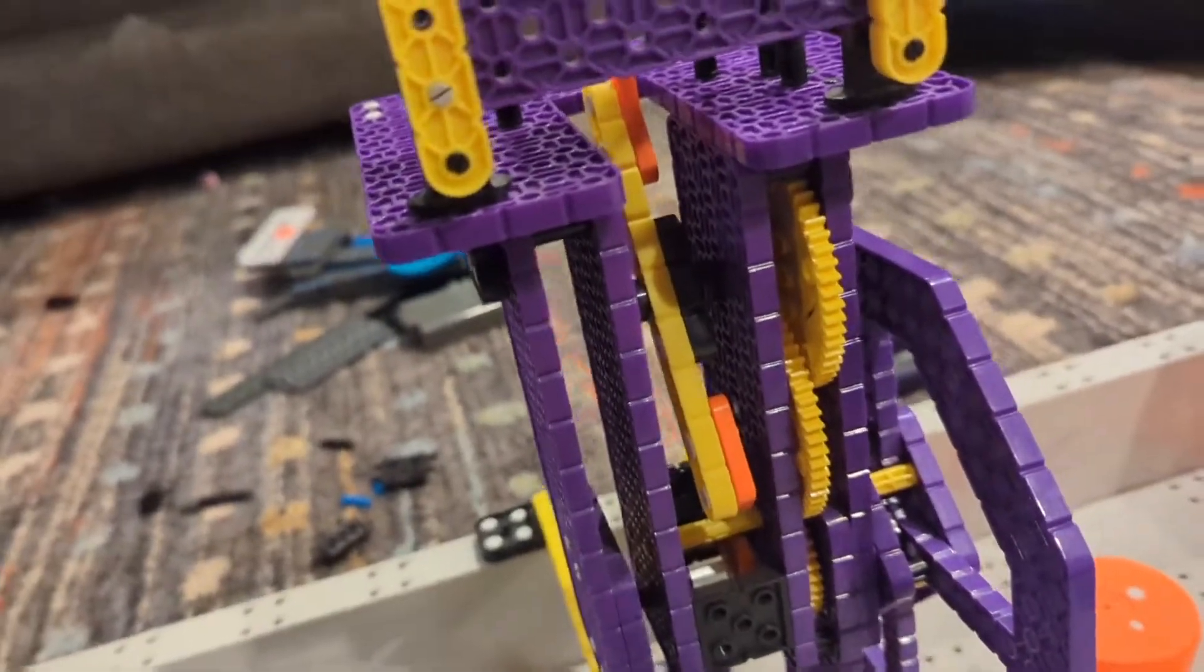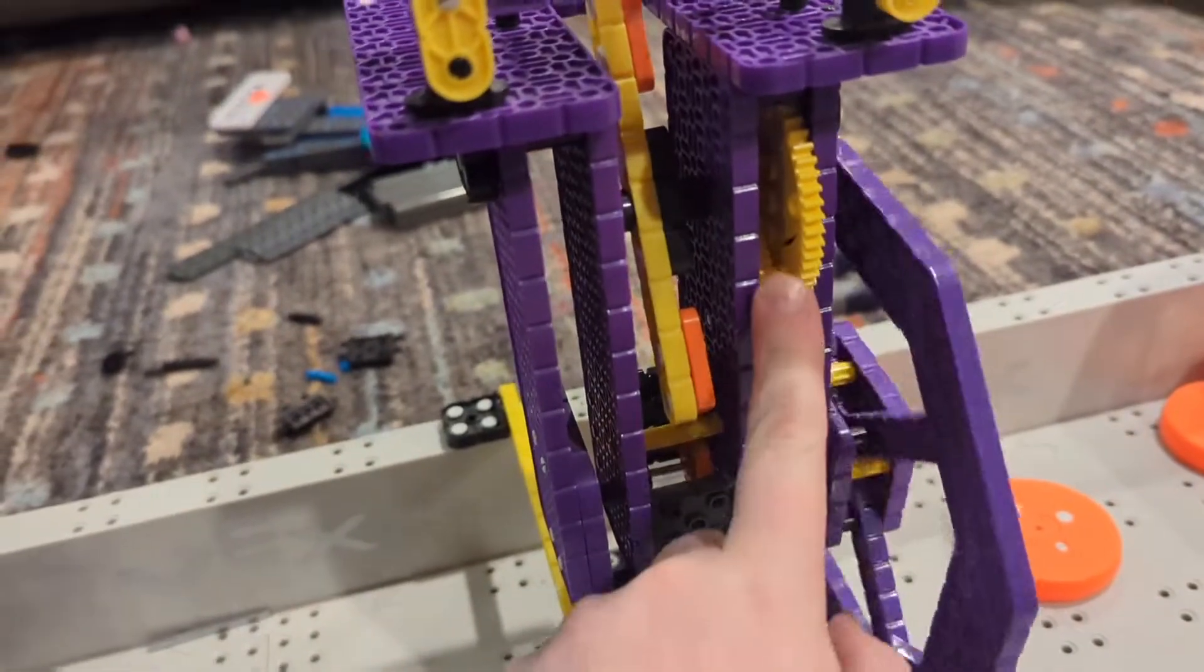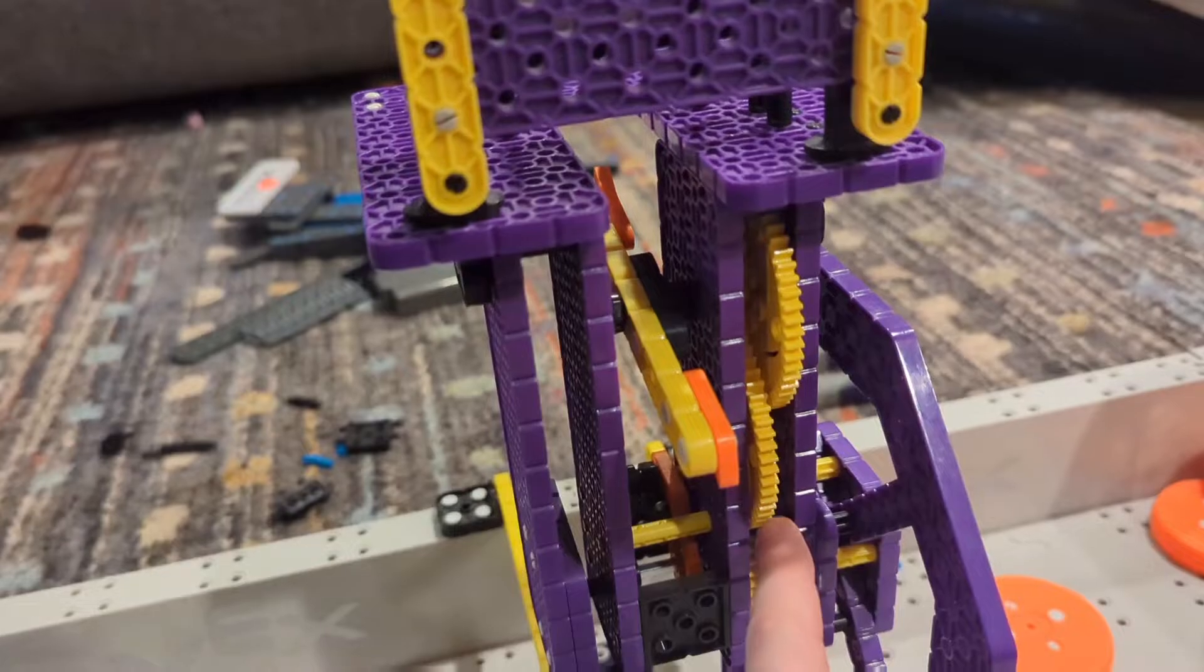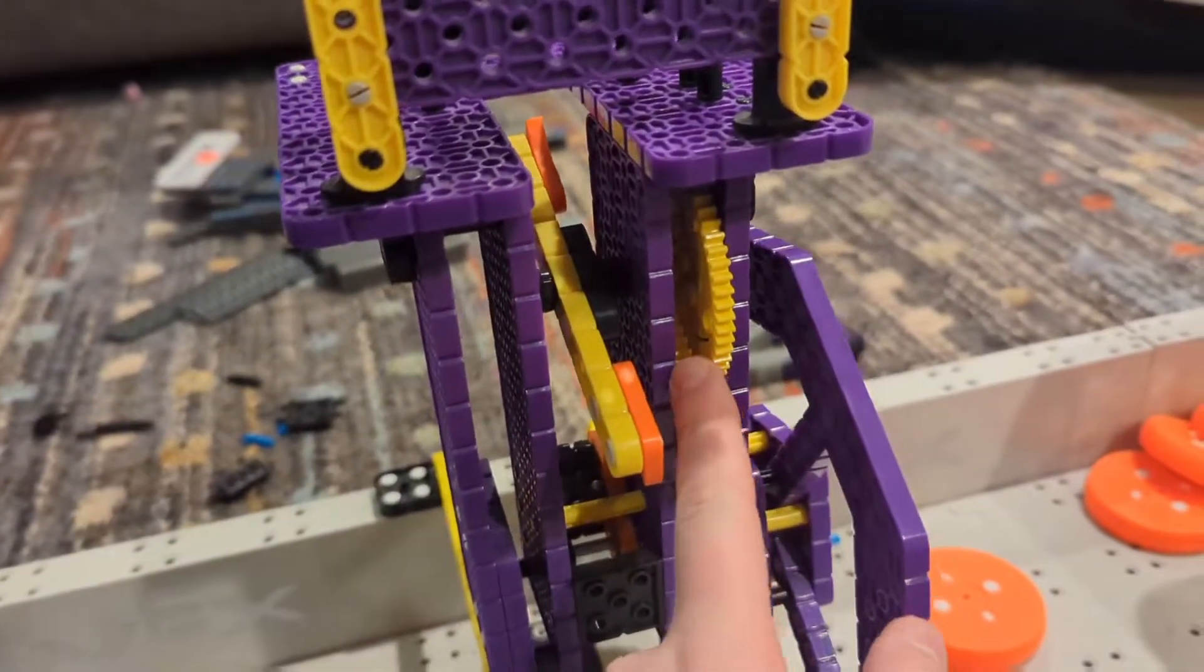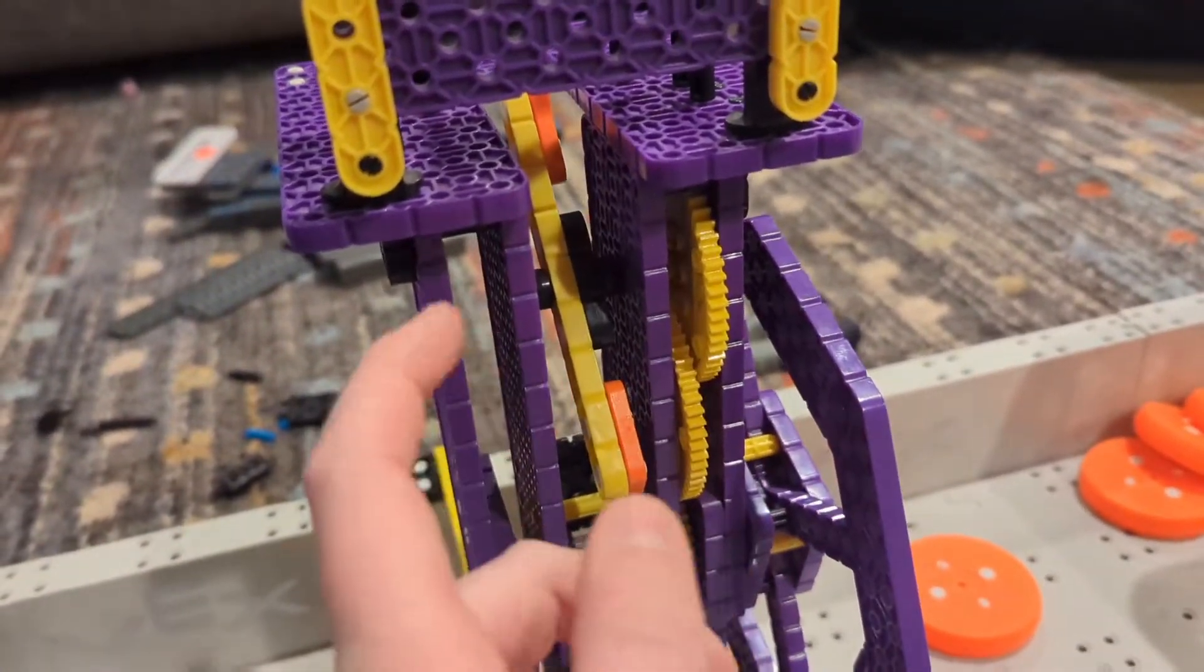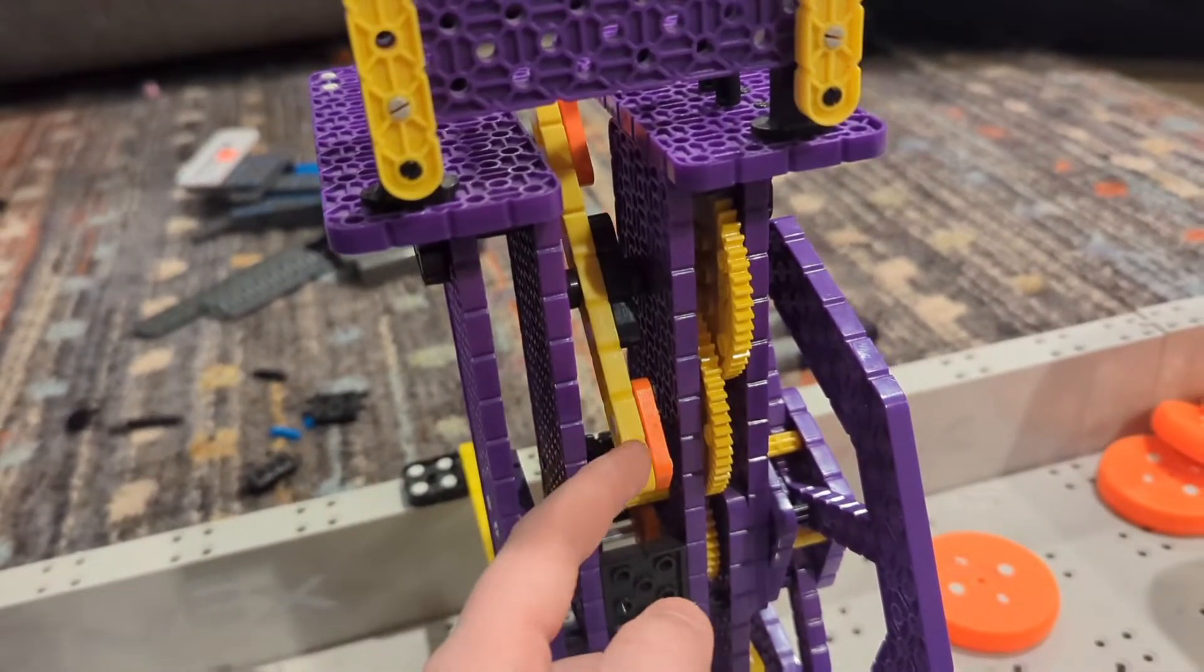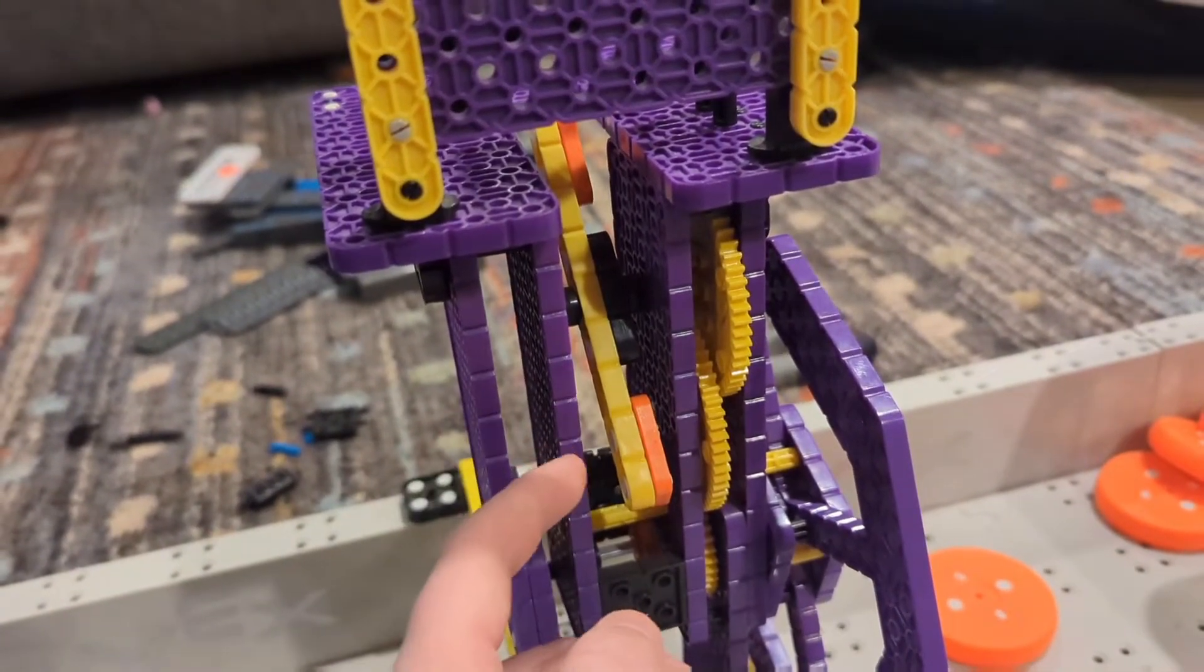So you may be wondering, why do we turn this gear directly instead of turning this spinner here? Well, there's a couple reasons. One of them is we can get up closer to the machine, which means our robot takes up less space. And with our new additions that we're going to be adding, we need a good amount of space to do that.